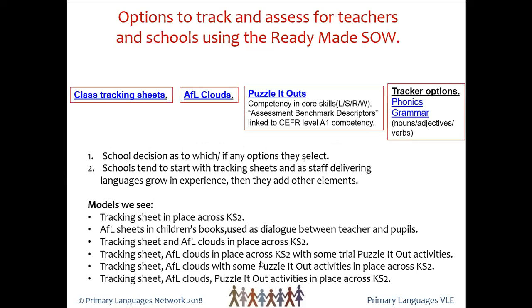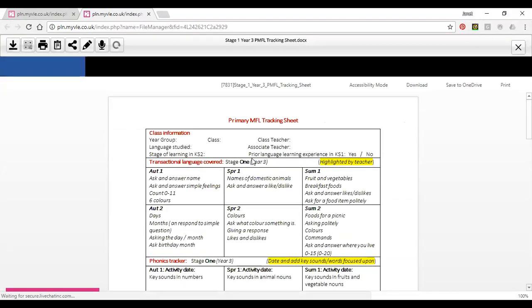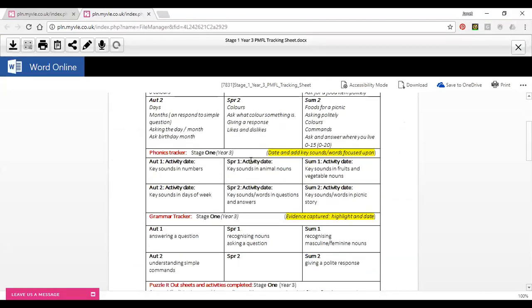We've brought all of that together and there are now on the VLE four options — people use a combination of these when working in their own schools. They are in the red boxes that you can see here. The class tracking sheets are sheets we offer you — one per class — and they are for stage one, stage two, stage three, and stage four of learning. They're Word documents so that you can change them if necessary to suit your own school. I'm going to open up the stage three one just to show you what's on there.